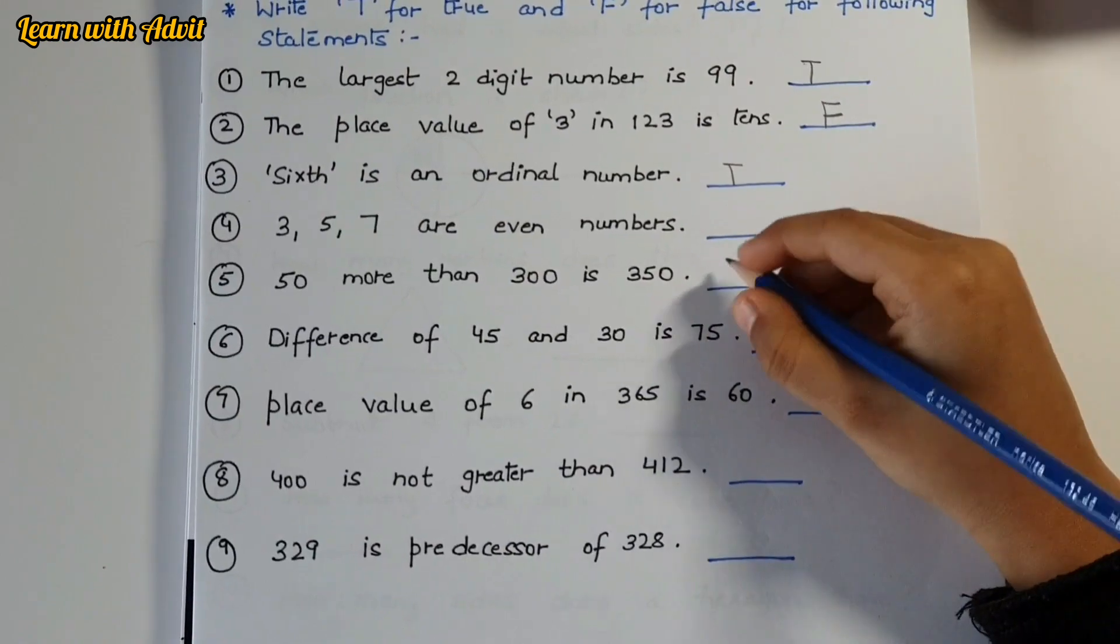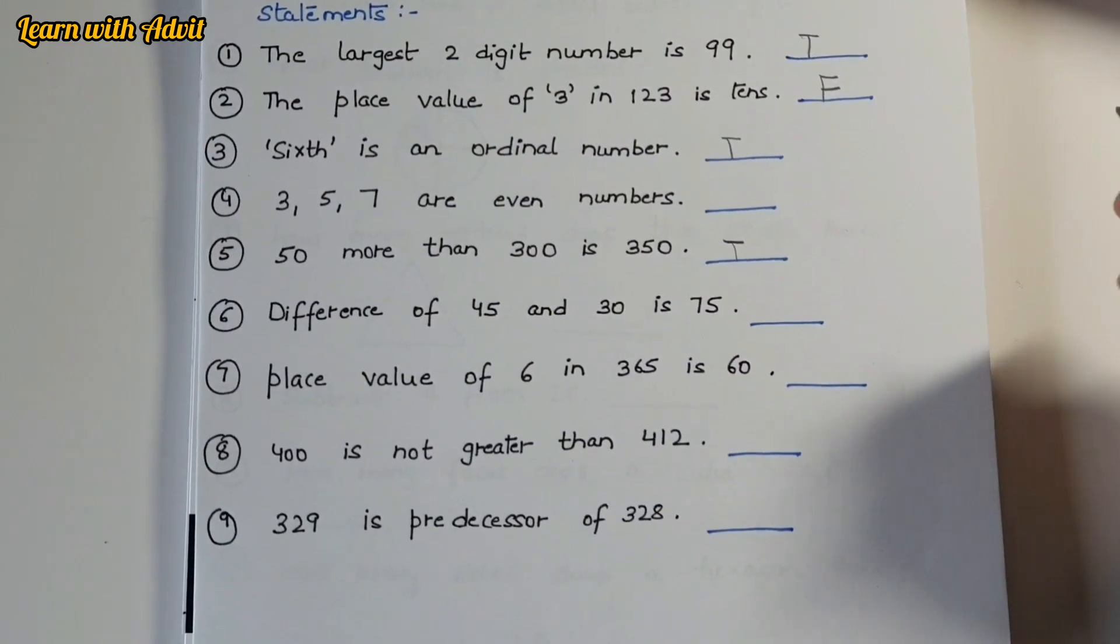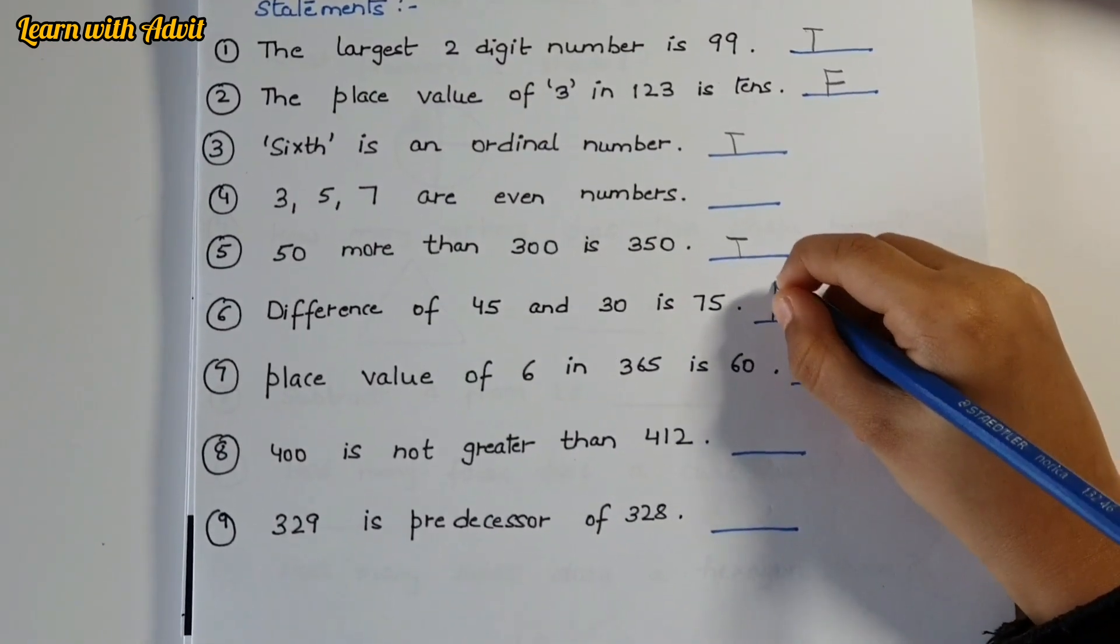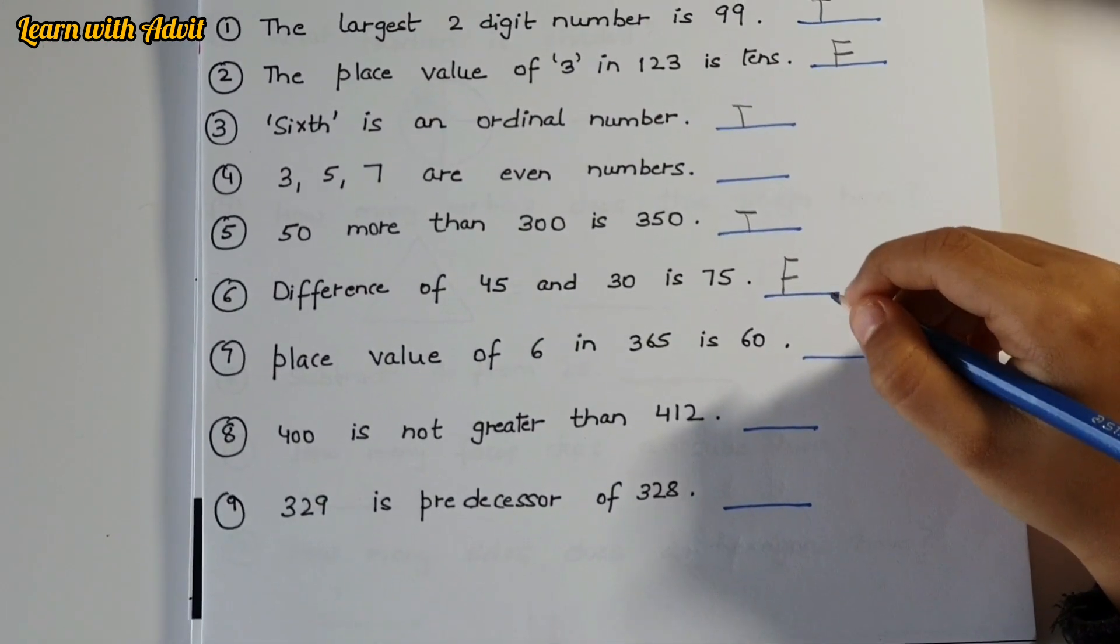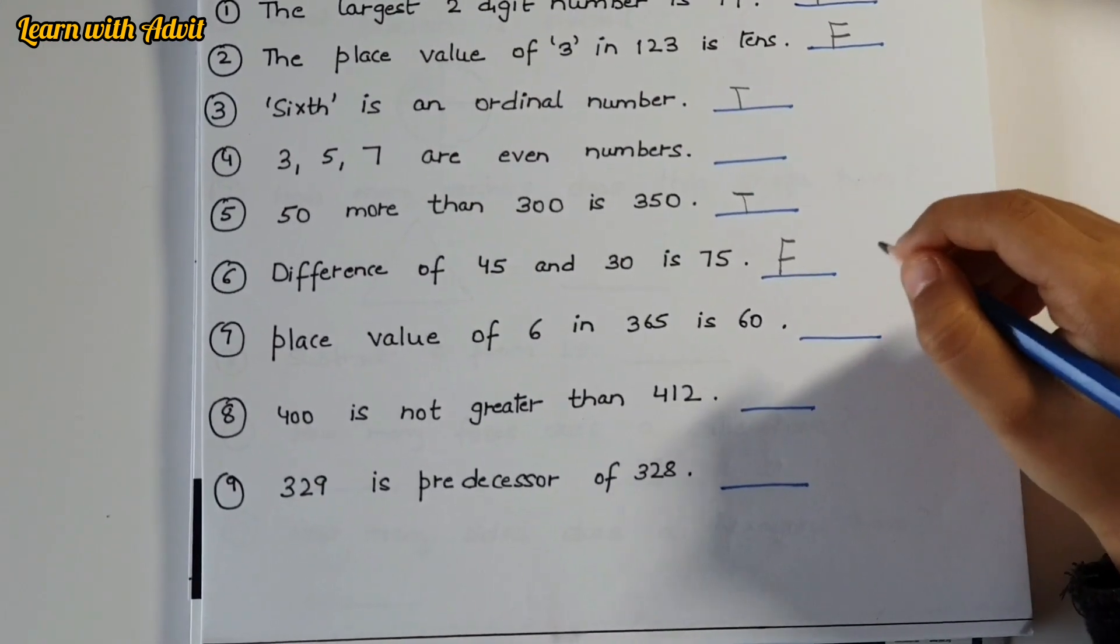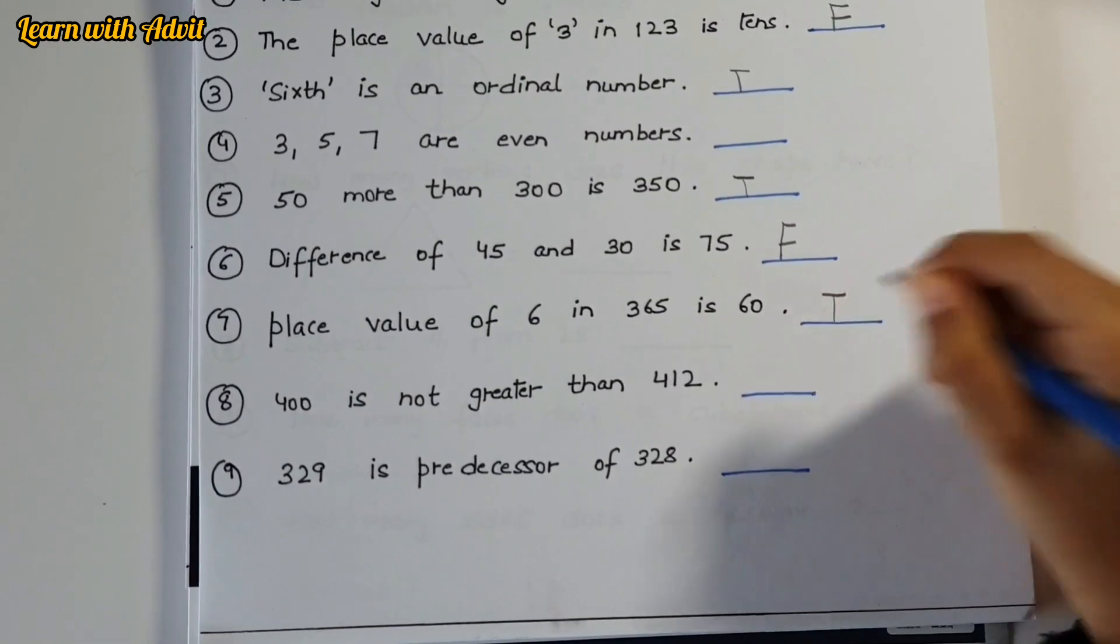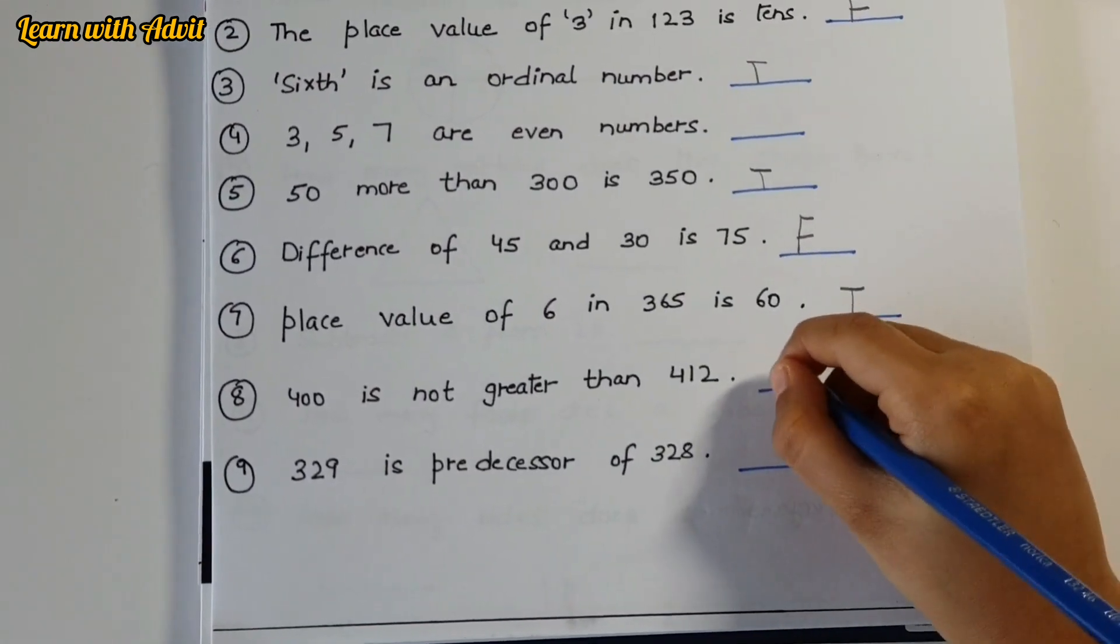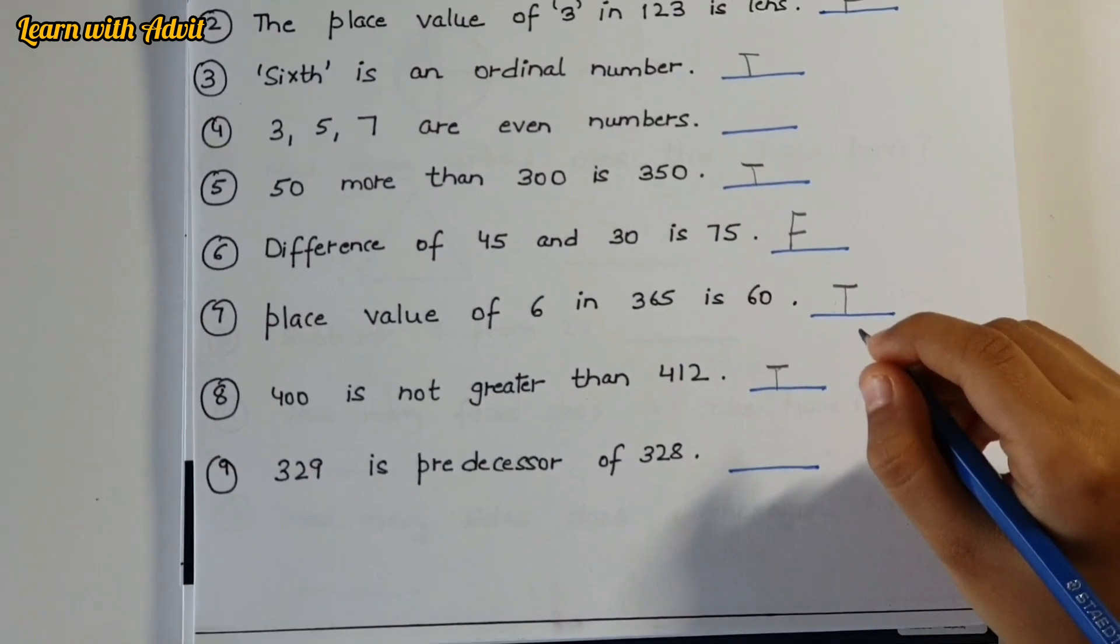Fifty more than 300 is 350 - yes, very good. Difference of 45 and 30 is 75 - no, because it's the addition, or is 75? Right. Place value of 6 in 365 is 60 - yes. 400 is not greater than 412 - yes, smaller.